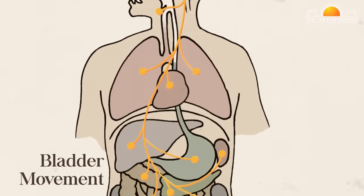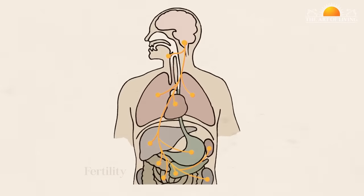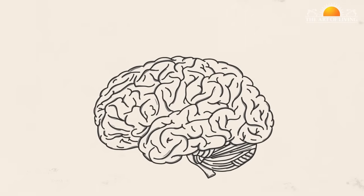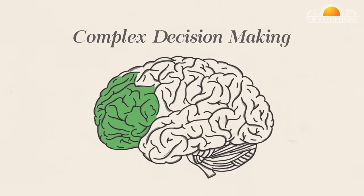It also controls bladder movement, orgasms and fertility. A healthy vagus nerve allows us to access the parts of the brain responsible for creativity, higher cognition and complex decision making.